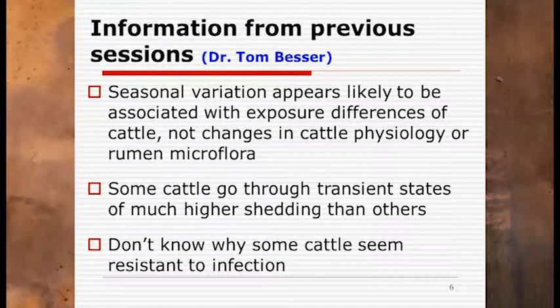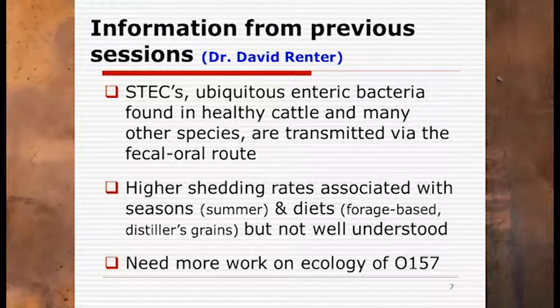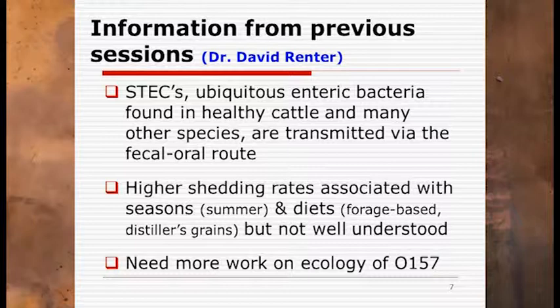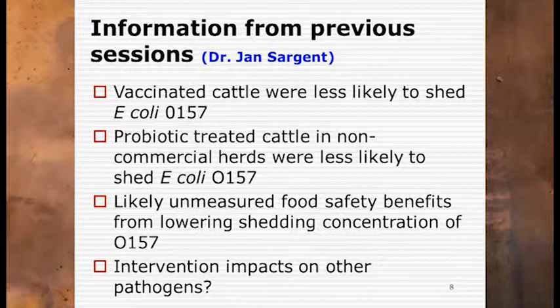Finally, there are some cattle that seem resistant to infection, and there are lots of opportunities for mitigating science to help determine what kind of mitigations may work better. Dr. Renter reminded us that this bacteria is ubiquitous in nature — found in 12 additional animals — and that the fecal-oral route of transmission means many can be mechanical rather than biological transmitters, carrying it from point A to point B without being sick. He identified summer as the highest shedding season and noted that the ecology of O157 — thinking of it as an environmental contaminant rather than an infectious disease surviving only in a given host — is an area for rich future work.